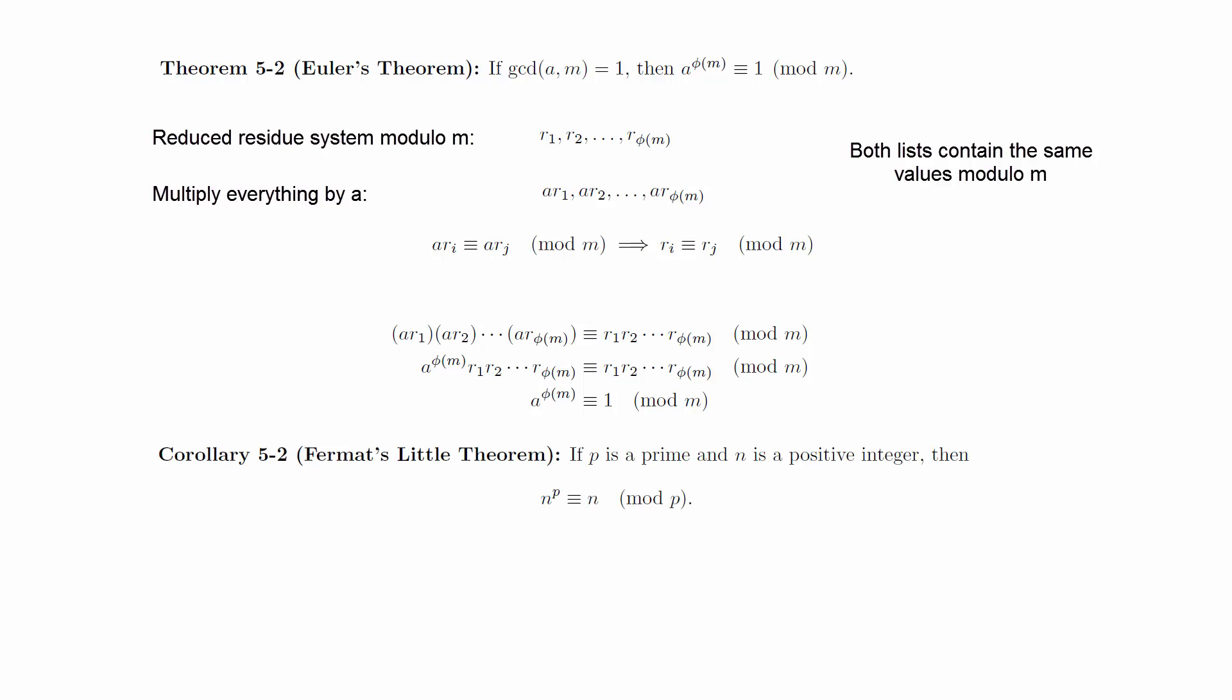Corollary: If p is a prime and n is a positive integer, then n to the p is congruent to n modulo p. To prove this, we first note that phi of p is equal to p minus 1 when p is prime. If the GCD of n and p is 1, then we can use this in Euler's Theorem and multiply by n to get the desired conclusion.